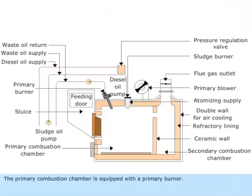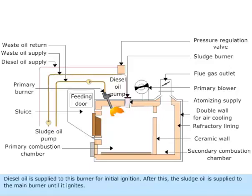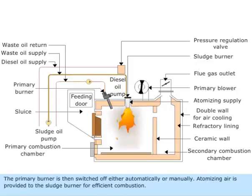The primary combustion chamber is equipped with a primary burner. Diesel oil is supplied to this burner for initial ignition. After this, the sludge oil is supplied to the main burner until it ignites. The primary burner is then switched off, either automatically or manually.